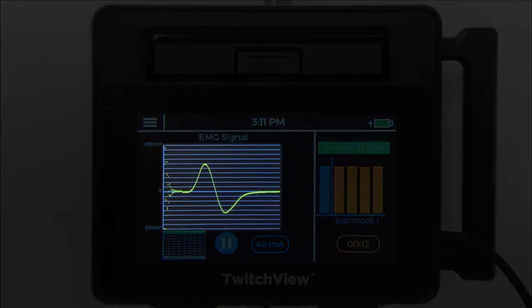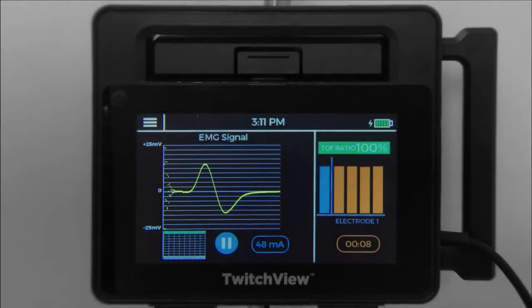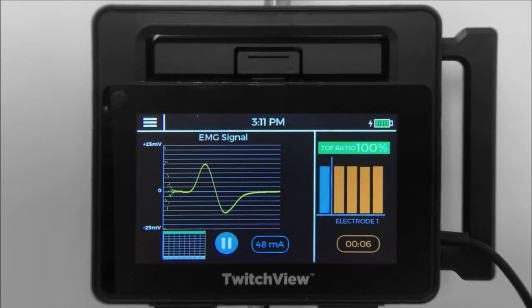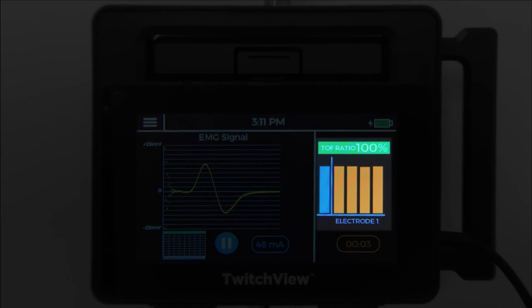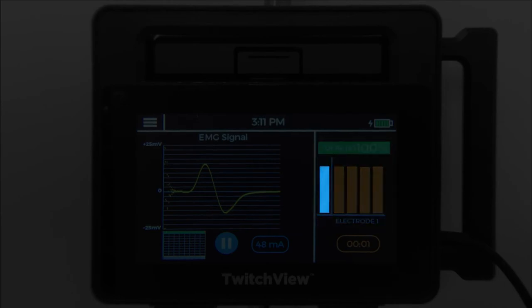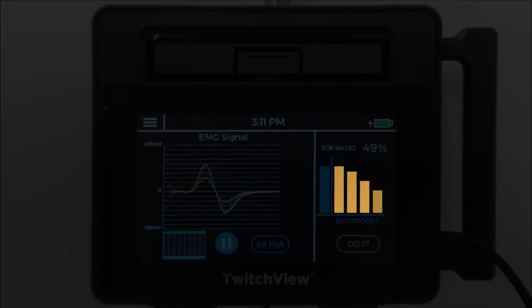On the left side of the screen, you will see the raw EMG waveform. On the right side of the screen, you will see the most recent TRAIN-4 measurement. The blue bar represents the patient's pre-paralytic measurement, and the orange bars represent real-time measurements or twitches.